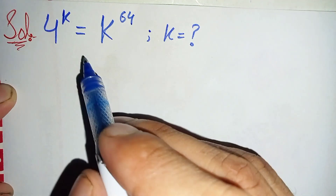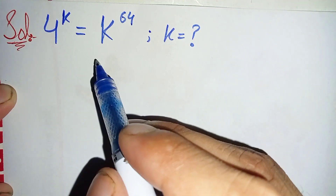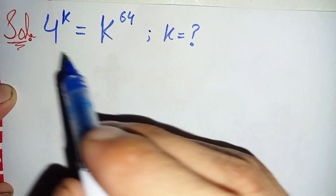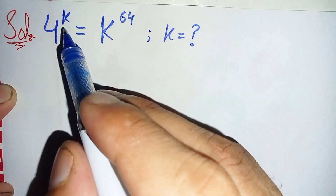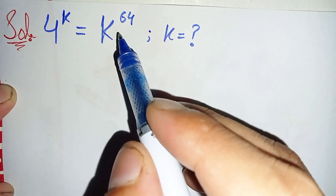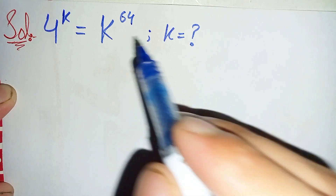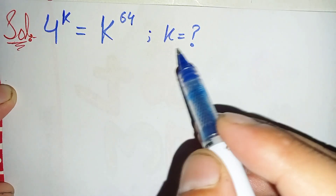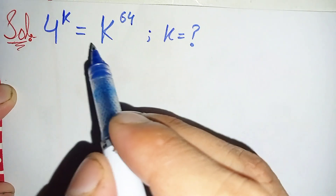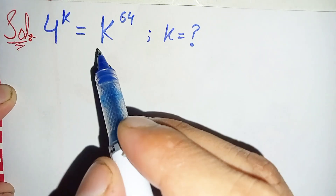Hi everyone. How to solve this interesting exponential equation, which is 4 raised to power k is equal to k raised to power 64. We will try to find the value of k.